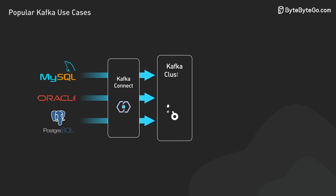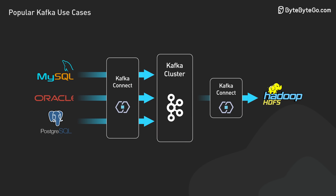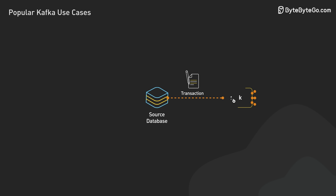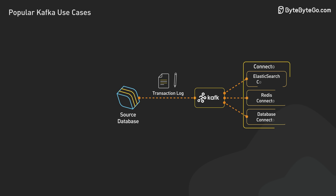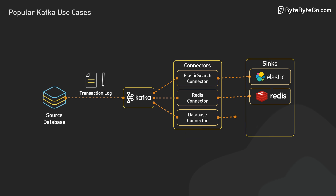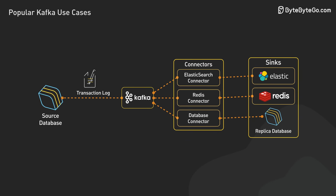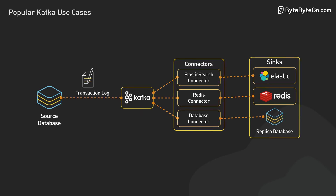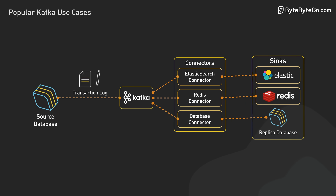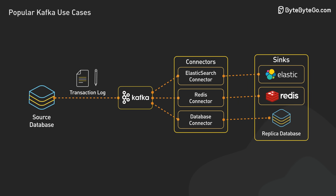To move data between Kafka and other systems, we use Kafka Connect. This framework allows us to build and run various connectors. For instance, we might have an Elasticsearch connector to stream data to Elasticsearch for powerful search capabilities, or a DB connector to replicate data to other databases for backup or scaling purposes.